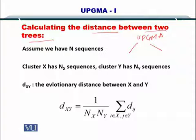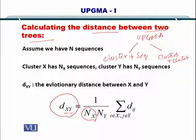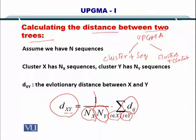Please remember that UPGMA has two components. In the first component, you cluster and add a sequence to it. In the second case, you add two clusters. The formula to compute the distance between cluster X and Y is the number of sequences in X multiplied by the number of sequences in Y, as a reciprocal, multiplied by the distance of each element I and J such that I belongs to X and J belongs to Y.